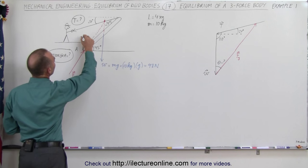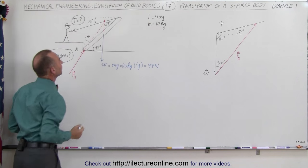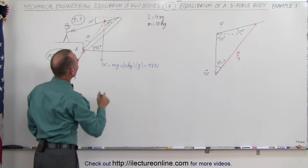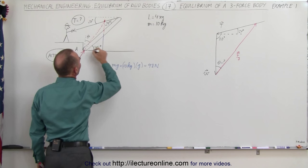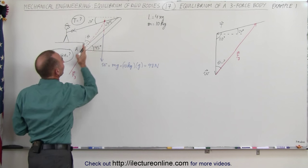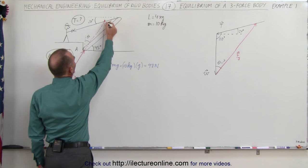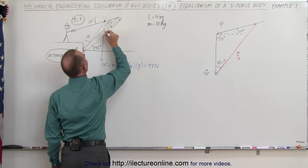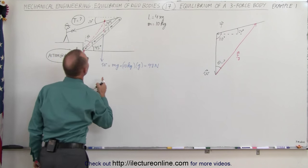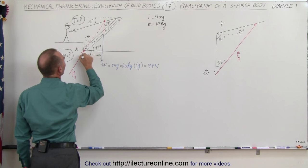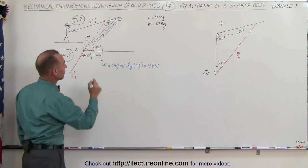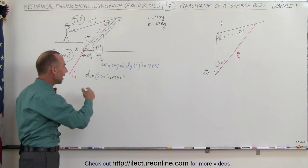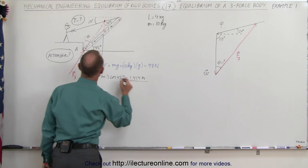How do we find angle theta? We need to know the actual dimensions of this particular triangle. If I can figure out this length — I already know that from there to there is 2 meters, so that's the hypotenuse. Distance 1 can be found by taking the hypotenuse times the cosine of 45 degrees. So distance 1 equals 2 meters times cosine of 45 degrees, which is 0.707, giving 1.414 meters.